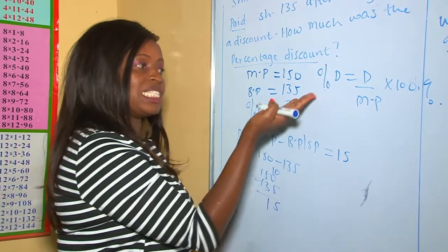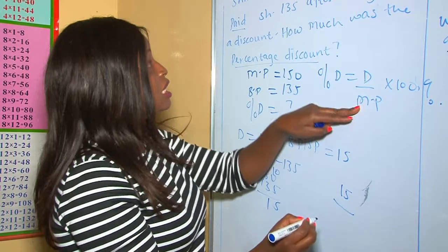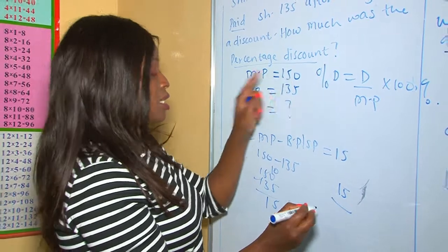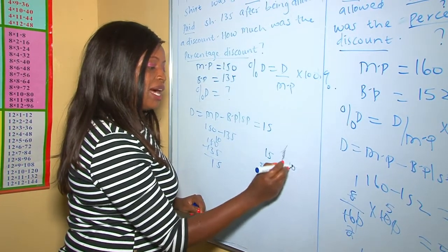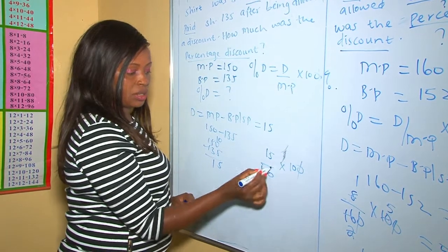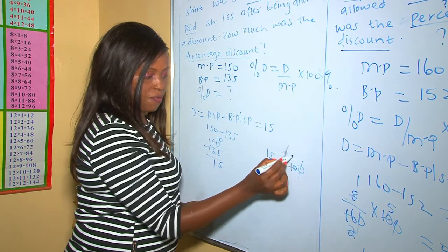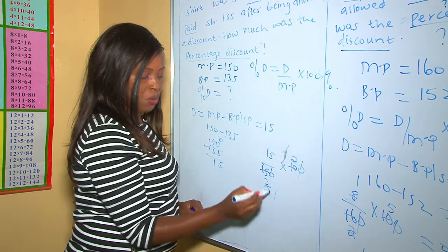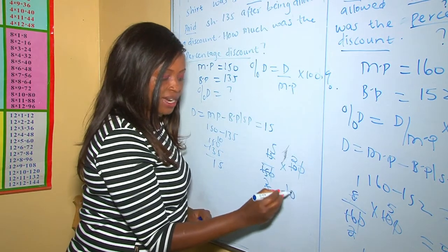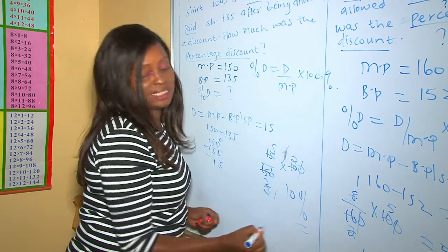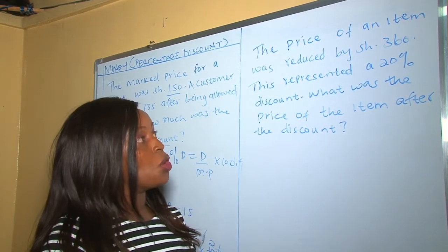Now let's get the percentage discount: (15 ÷ 150) × 100. The zeros cancel, giving 15 ÷ 15 × 10 = 10. Therefore the answer is 10% — the percentage discount was 10%.